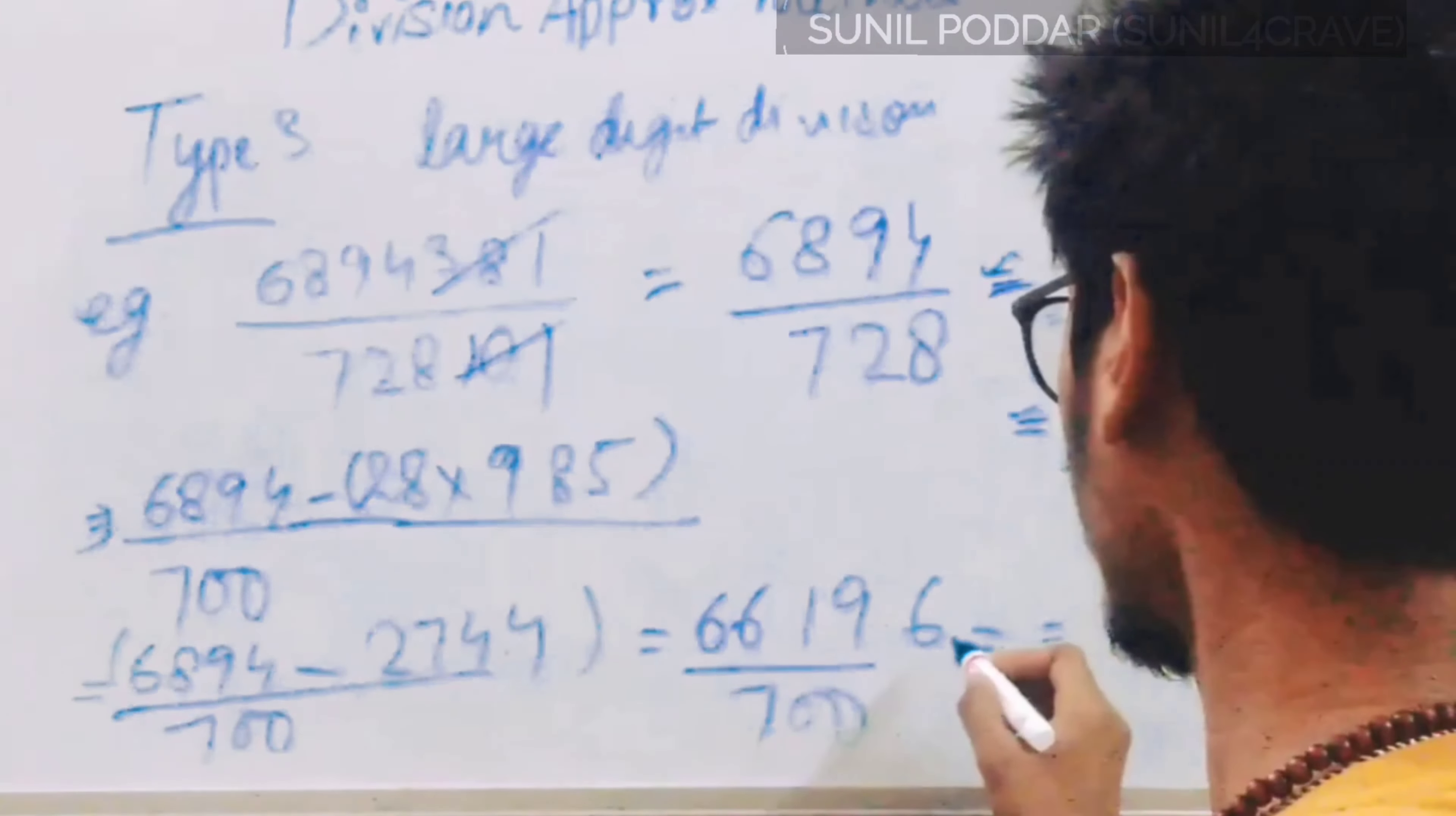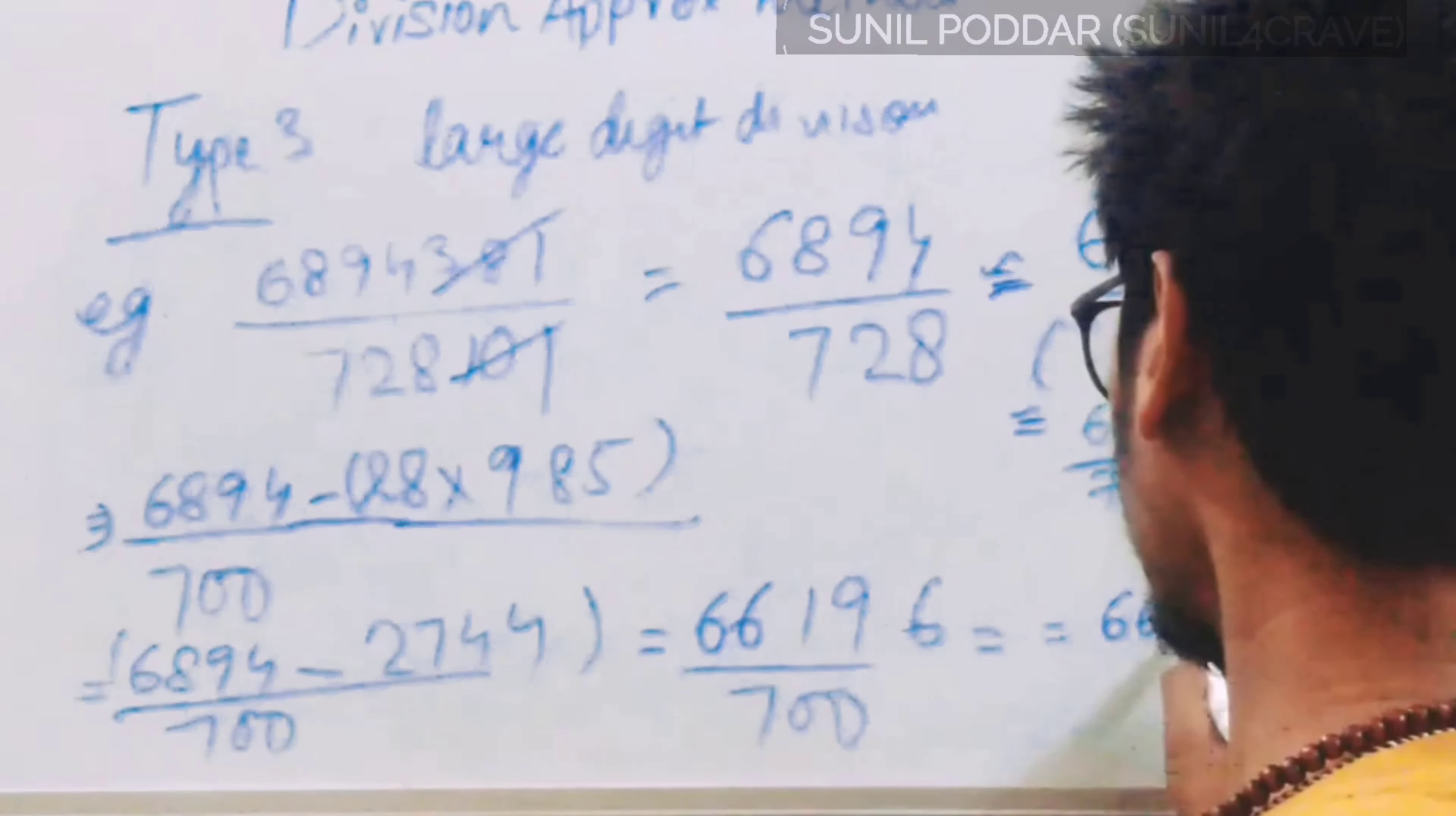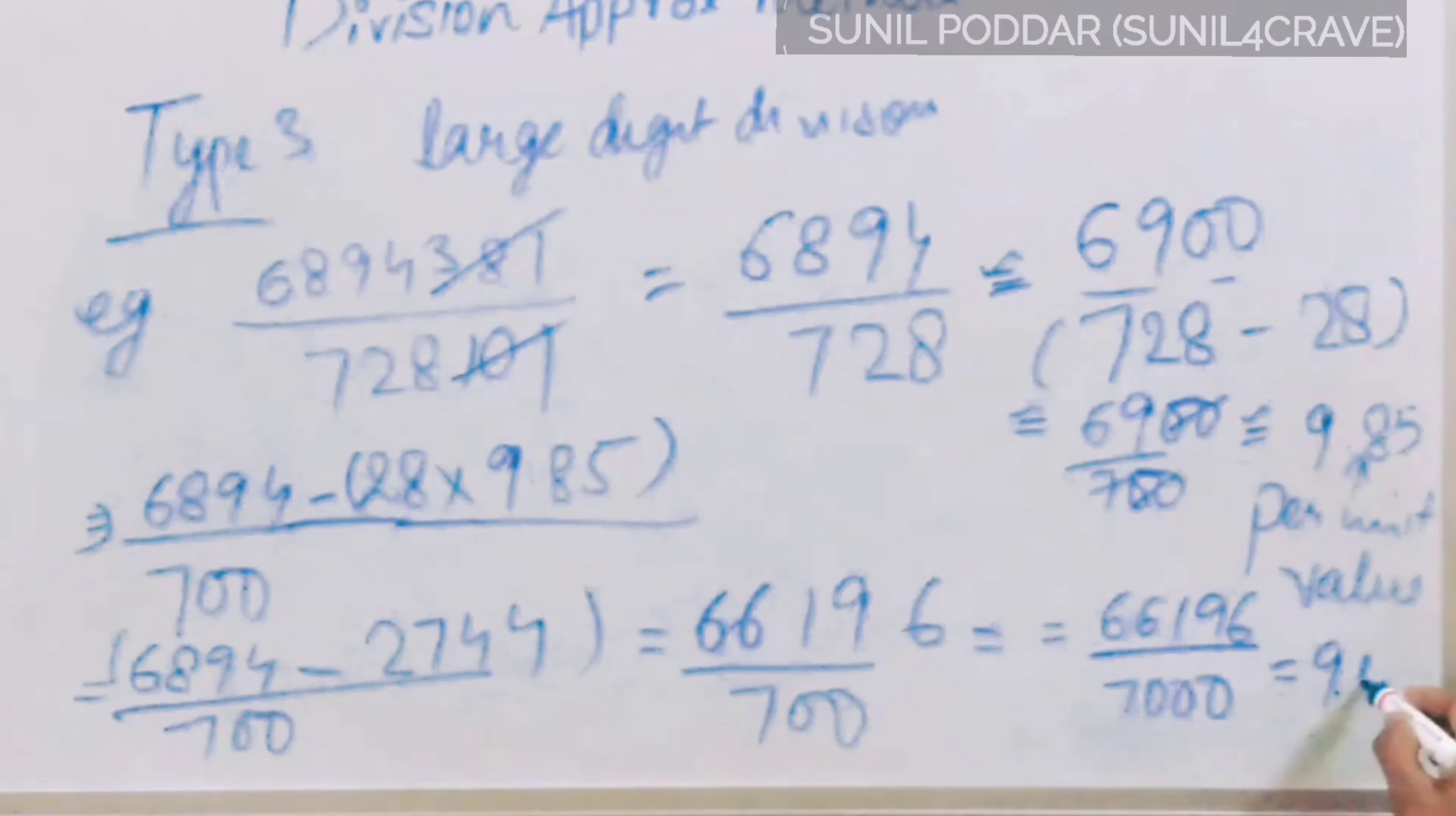After solving this, we will divide 66,196 with 7. The answer will come out 9.456. Always keep the 1000 separate, because it is easy to divide 66,196 with 7. When you get the answer, you will use your decimal method and take the decimal to the number where it is required. Our approximate answer is 9.456.